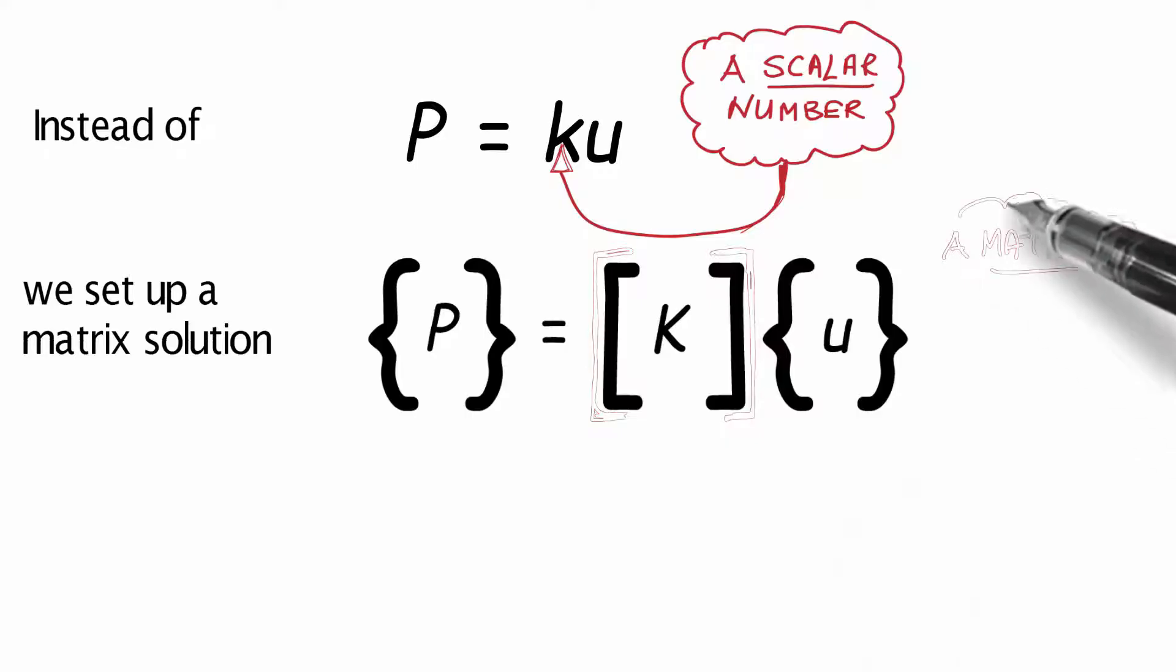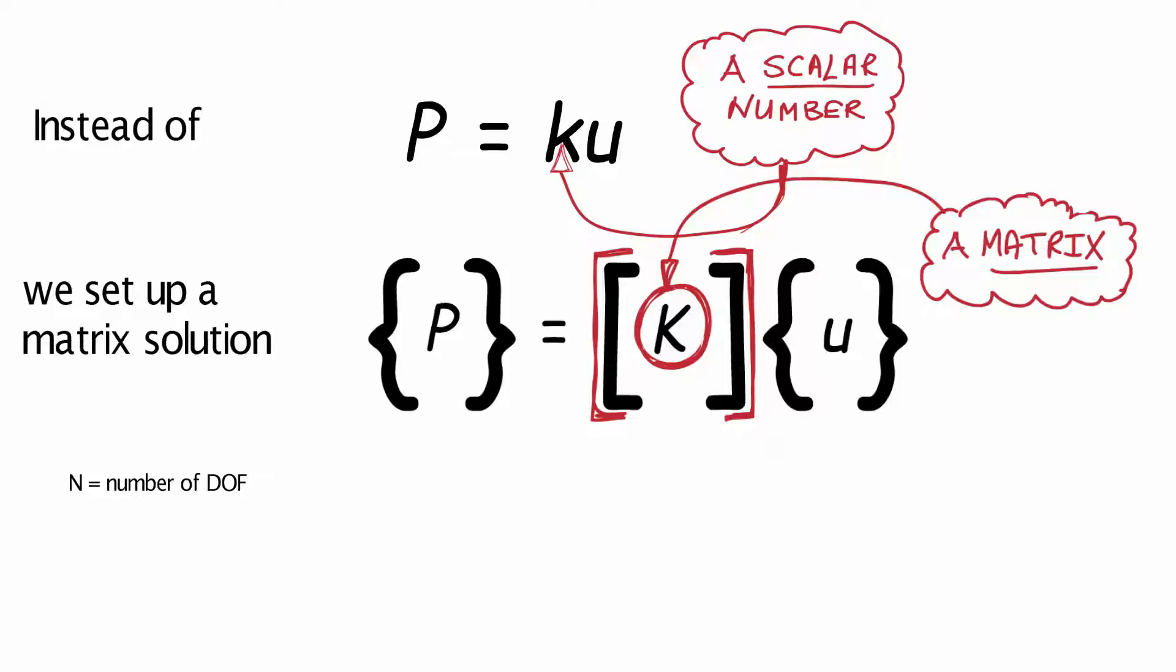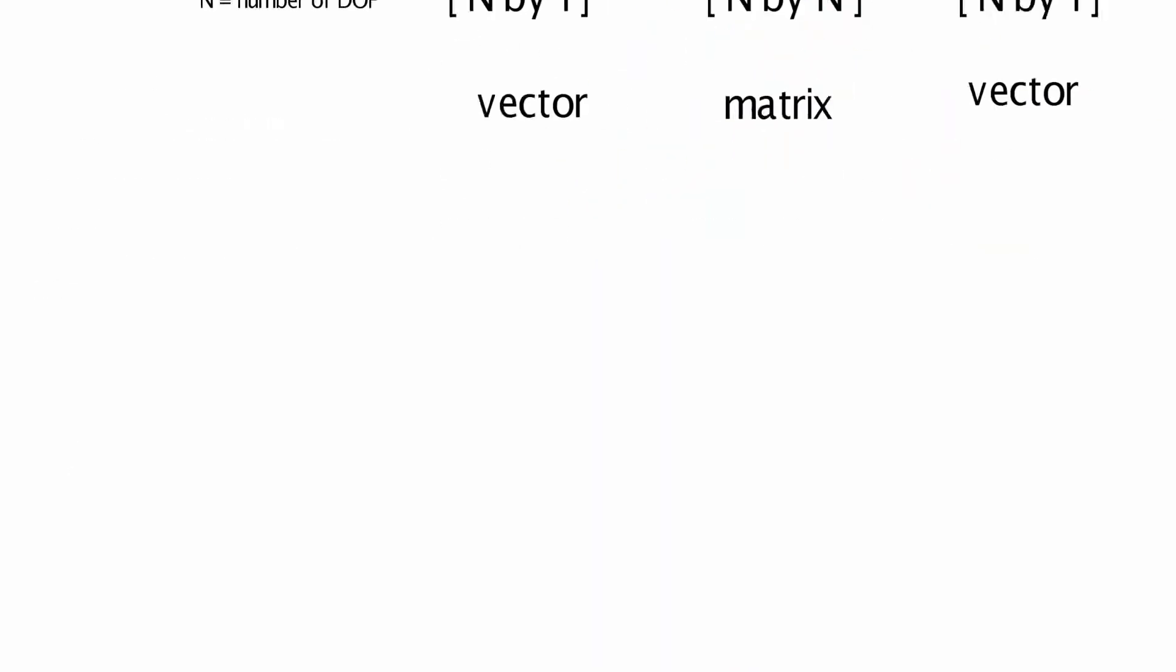The stiffness matrix is going to be a big matrix representing the full FEA model. If we have 10,000 degrees of freedom, then N is 10,000. So the vectors in the matrix fill out like this. The complete structural stiffness is assembled and we solve for 10,000 unknown degrees of freedom.